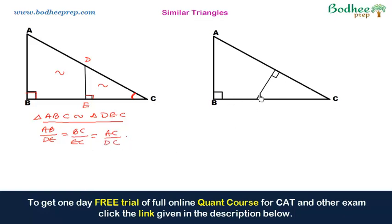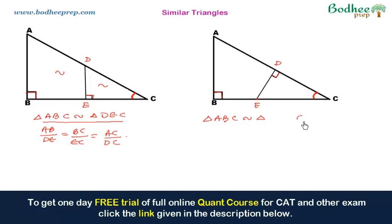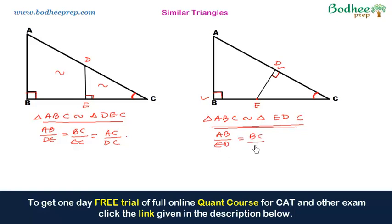The second scenario: instead of dropping a perpendicular on BC, we take any point on BC and drop a perpendicular onto AC. Suppose this point is D and this point is E. These two triangles are again similar. Angle C is common to both triangle ABC and triangle CDE, and one angle is 90 degrees in each. So triangle ABC is similar to triangle CDE, giving the corresponding ratio AB/ED = BC/DC = AC/EC.